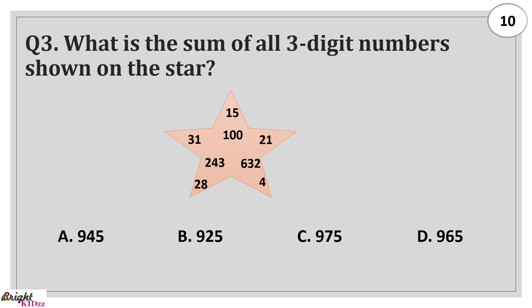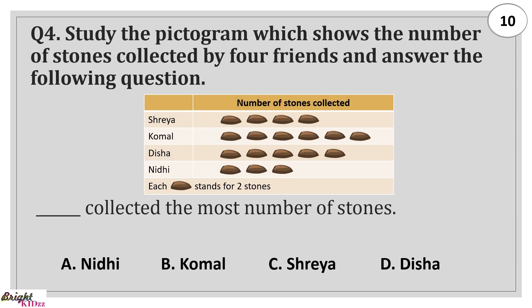What is the sum of all 3-digit numbers shown on the star? If we add 100, 243, and 632, it will become 975. Study the pictogram which shows the number of stones collected by 4 friends. Dash collected the most number of stones. Answer: Komal.